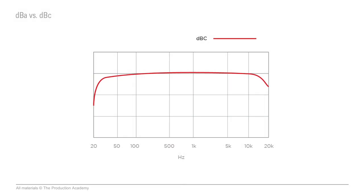You could have a mix that has a lot of low end to it, and it wouldn't really push up the DBA reading that much. If you take a look at the DBC reading, you can see that the low frequencies are taken into account much more than A-weighting. If you have a mix with a lot of low end frequencies — a lot of bass guitar and kick drum — it will push the DBC reading up much quicker.